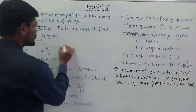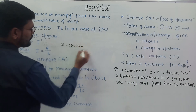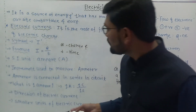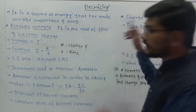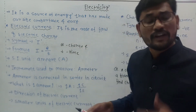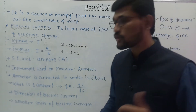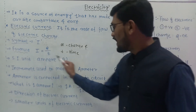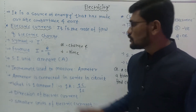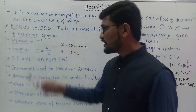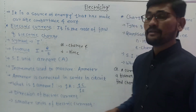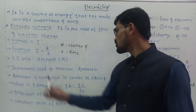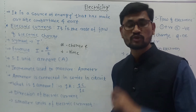In the formula I = Q/T, Q is charge and T is time. The unit of time is second, and the unit of charge is coulomb. Therefore, the SI unit of electric current is ampere, denoted by capital A. When this electric current is flowing in a circuit, we need a device to measure it. That device is called the ammeter, which is used to measure electric current.